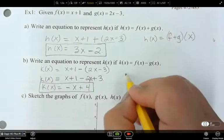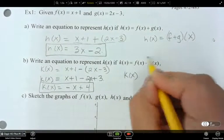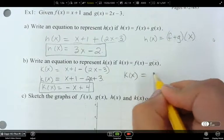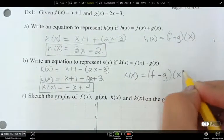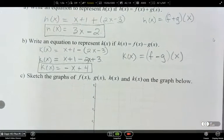And another way that you could see k of x written, or the way that this could be written, would be f minus g, and then that of x.